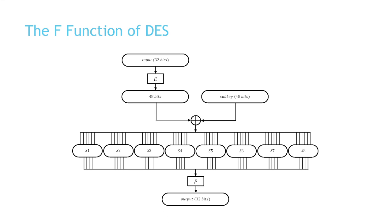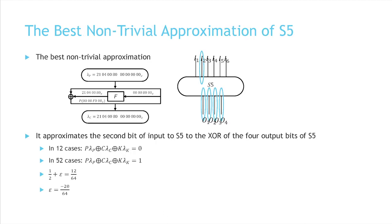Since the S-boxes are the only non-linear component, the attack is based on statistical linear relations of the S-boxes. For example, the best linear approximation of S5 approximates the second bit of input to the XOR of the 4 output bits. The probability of this approximation is 12 divided by 64 — in 12 cases of the 64 possible inputs the parity of these bits is 0, while in 52 cases the parity is 1.